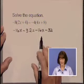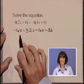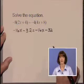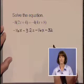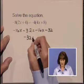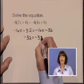And if we begin to isolate the variable by, say, adding 16x to both sides, the 16x's disappear, leaving us with the statement negative 32 is equal to negative 32.